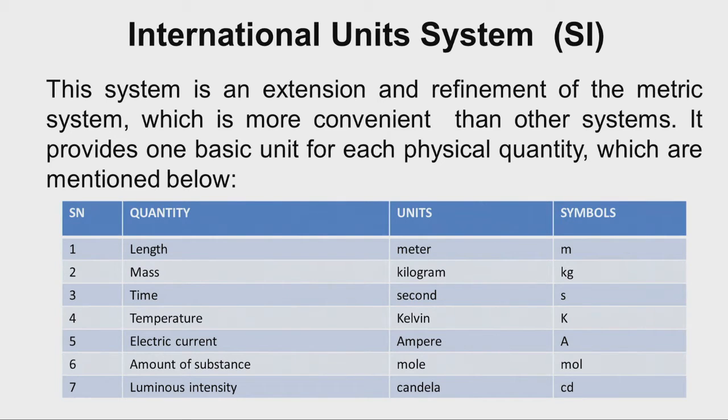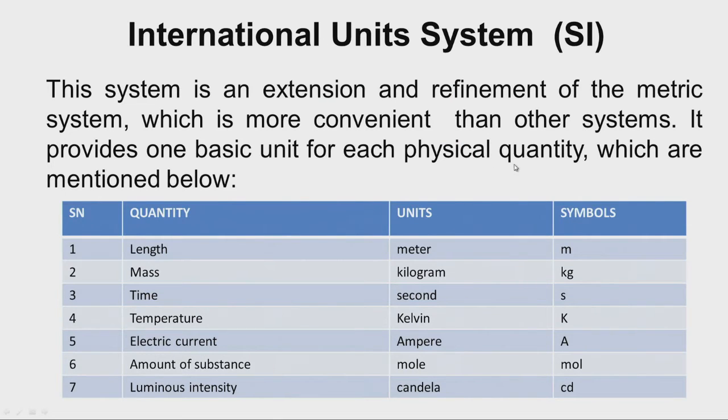Let us start the discussion on the international unit system. There are many unit systems like the imperial system and the metric system. The international unit system is an extension and refinement of the metric system, which is more convenient to use. It provides one basic unit for each physical quantity: for length the unit is meter (m), for mass the unit is kilogram (kg), and similarly there are seven basic units in total.